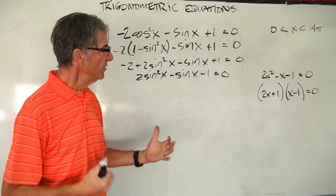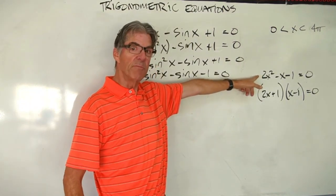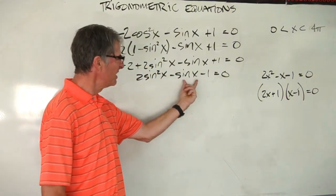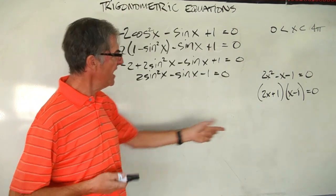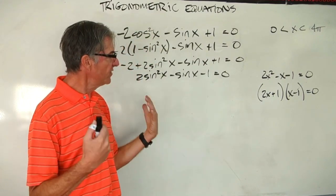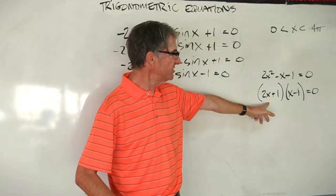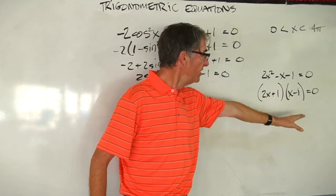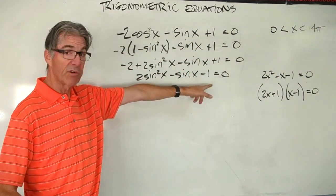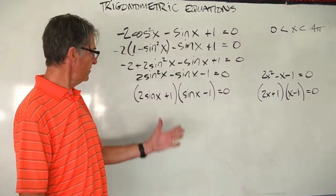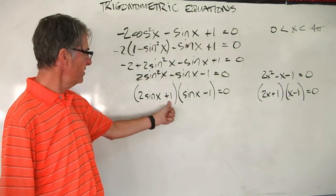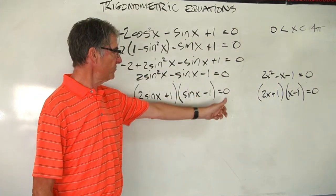Here it is written as a regular quadratic: 2x squared minus x minus 1 equals 0. That factors to (2x plus 1)(x minus 1). Using this pattern to rewrite the trig expression gives us (2 sine x plus 1)(sine x minus 1) equals 0.